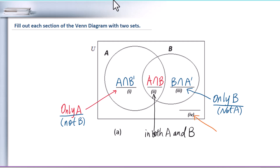Section 4 means neither A nor B. So A' intersection B' is the set for section 4.